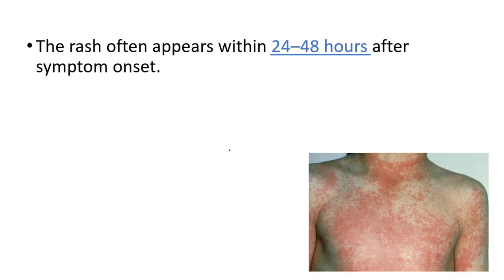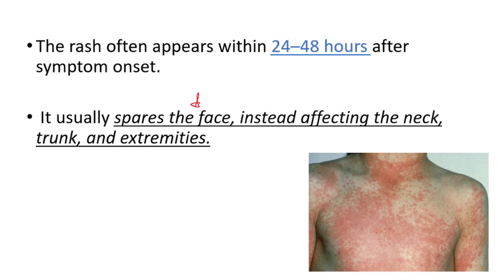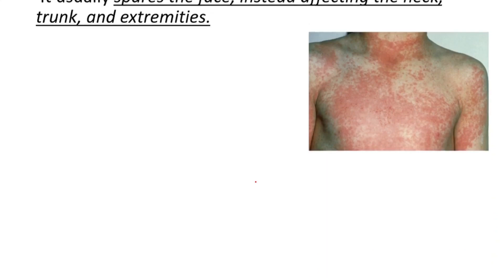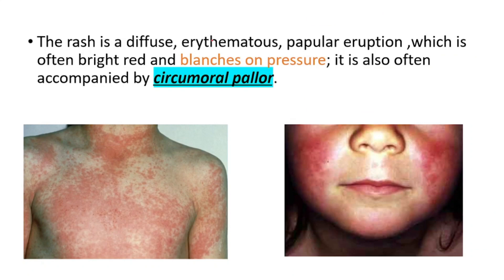The rash often appears within 24 to 48 hours after symptom onset. It usually spares the face, instead affecting the neck, trunk, and extremities, though it can also affect the face. The rash is a diffuse erythematous papular eruption, often bright red, and blanches on pressure — which is important for differentiating it from other causes of rash in children.